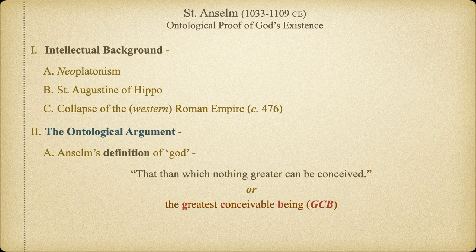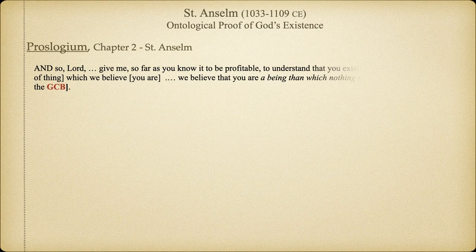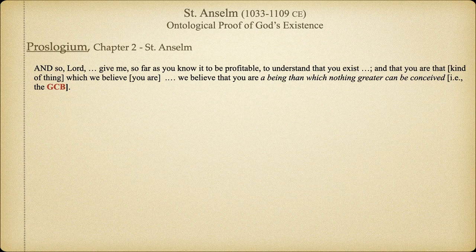From this definition, Anselm will proceed to demonstrate not merely that God exists, but also that God must exist. So let's go now to the argument, which I've simplified for the sake of clarity. We find in chapter 2 of the Proslogium the definition that will provide the foundation for his ontological argument. Note that he makes clear that he already believes that God exists, and is asking for guidance in demonstrating through an application of reason what he already believes. So this is, again, no crisis of faith.